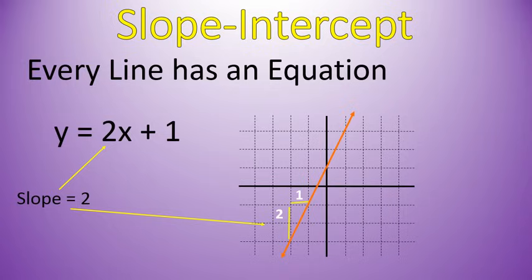The other piece of information that we see is the 1. And the 1 is where it crosses the y-axis. That's called the y-intercept. So it crosses the y-axis at the point 0, 1, which is right there. And so we can see the slope and the y-intercept. That's why this form of a line is called the slope-intercept form of a line.